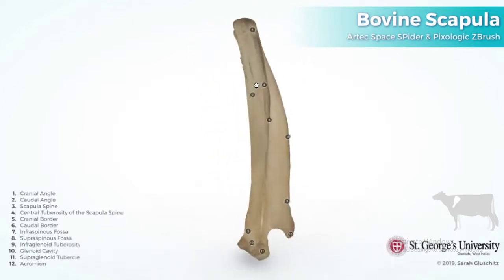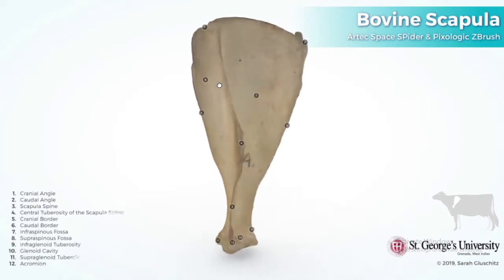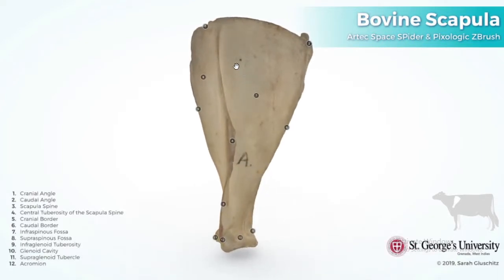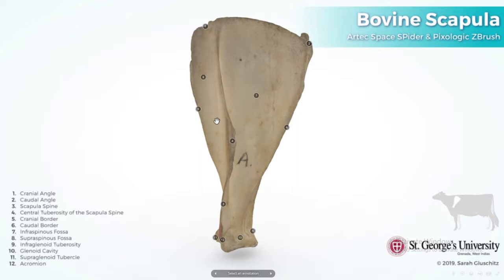This is a 3D model of a bovine scapula. Before demonstration, a question arises: how can we determine the side of a scapula — whether it is a left or right scapula? Keep in mind: the supraspinous fossa of a scapula bone is always at the cranial side of the spine, and the infraspinous fossa is always at the caudal side of the spine.